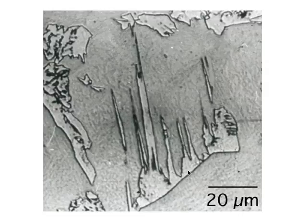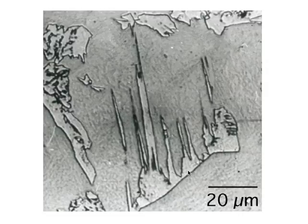Furthermore, when we etch, they appear to be clean — they appear white compared with the background. That indicates that there is no structure inside the plates, no structure which is attacked by chemical etchants. So you can easily distinguish Widmanstätten ferrite from bainite from the coarseness of the plates, which you can resolve using optical microscopy, and the fact that they etch white.